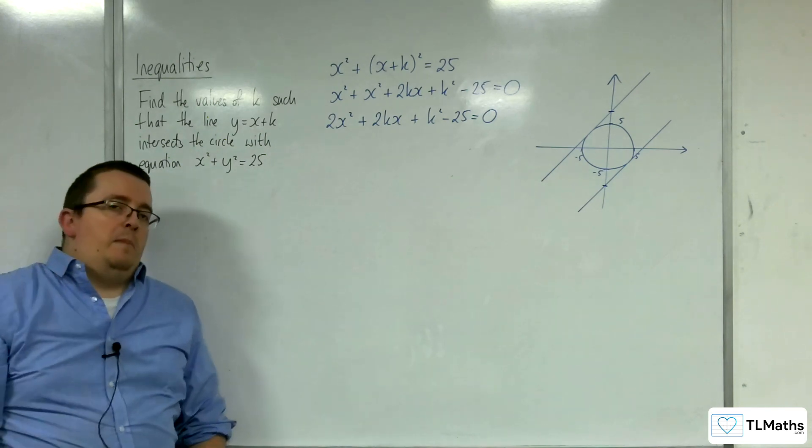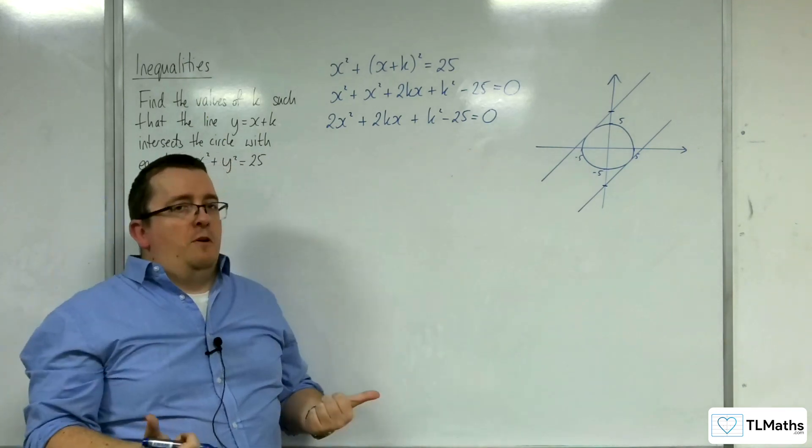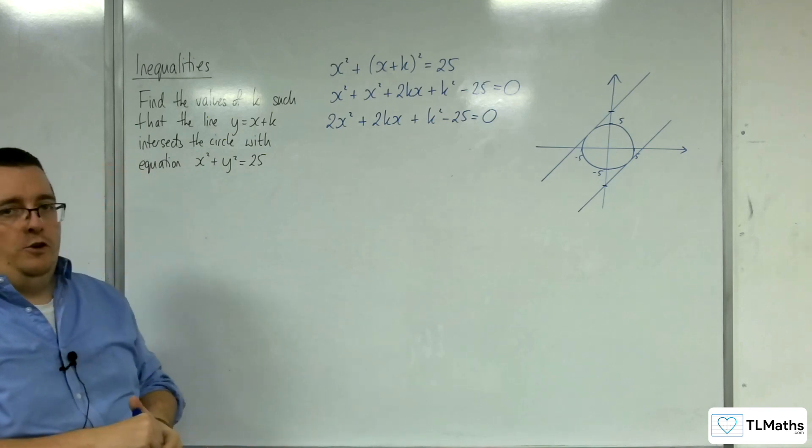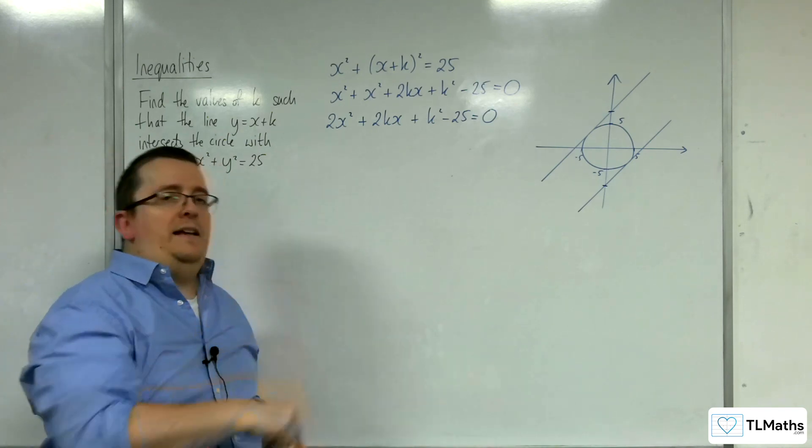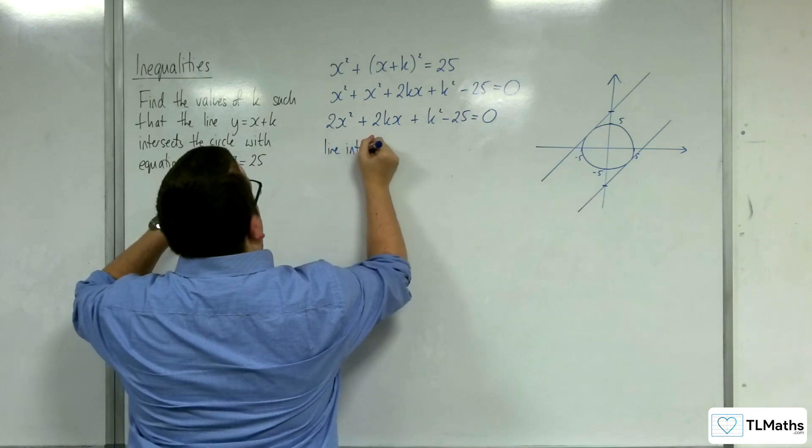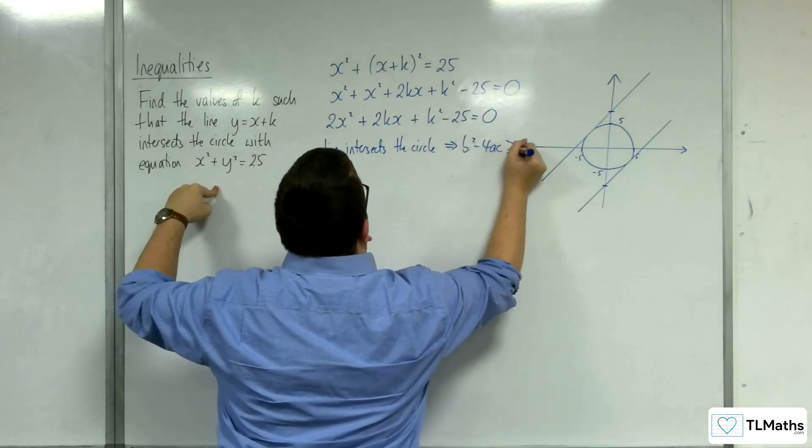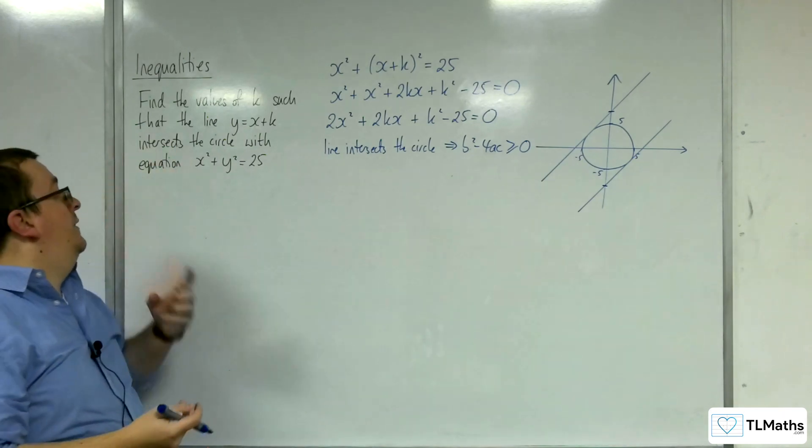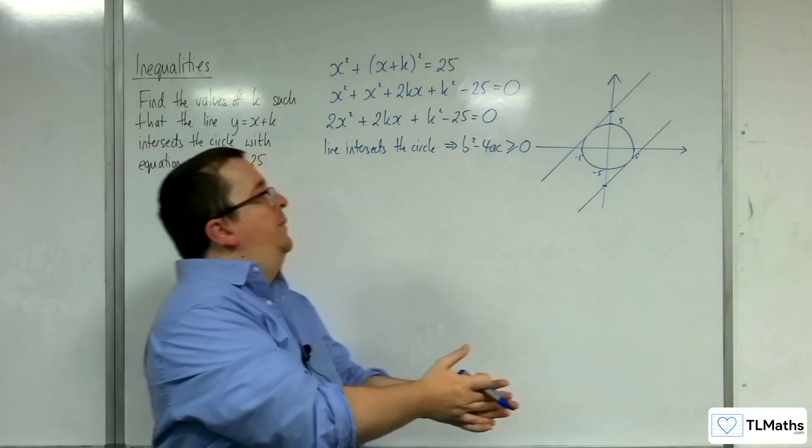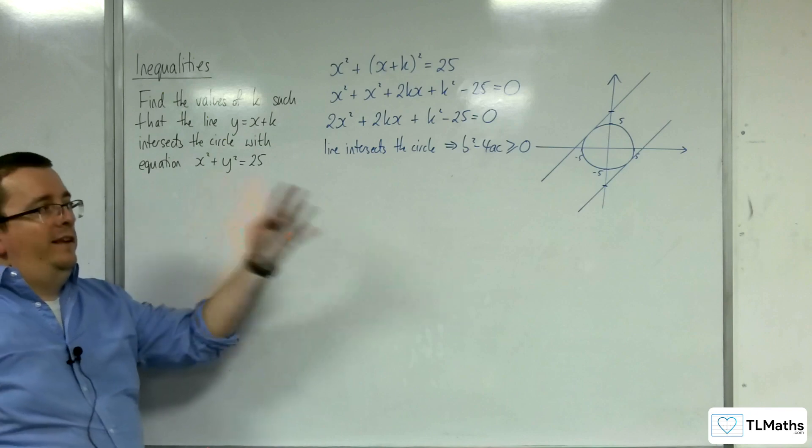Now eagle-eyed among you should now be seeing that and going, this is a quadratic. It's got k involved. Discriminant's probably going to be involved as well. Because ultimately I need this quadratic to have real solutions. So that means the discriminant has to be greater than or equal to 0. So the line intersects the circle and that implies that the discriminant must be greater than or equal to 0. Now the question doesn't say two distinct real points. In which case if it was that, then I'd be saying greater than 0. But because it just says intersects, I'll go with greater than or equal to 0. So the line could be a tangent.